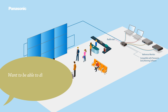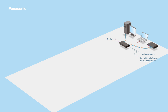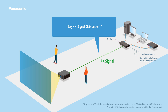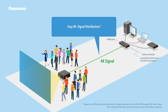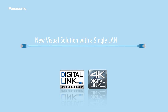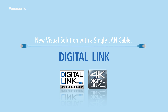Want to be able to distribute 4K signal via a single cable? Easy 4K signal distribution. The new visual solution with a single LAN cable — Digital Link.